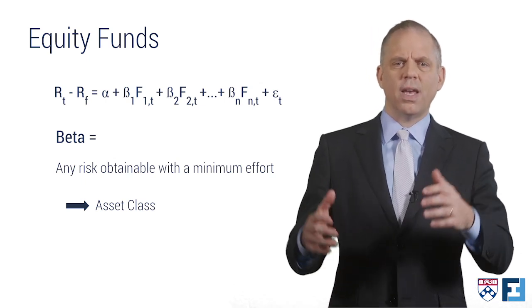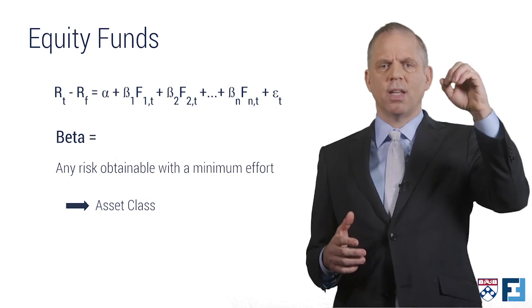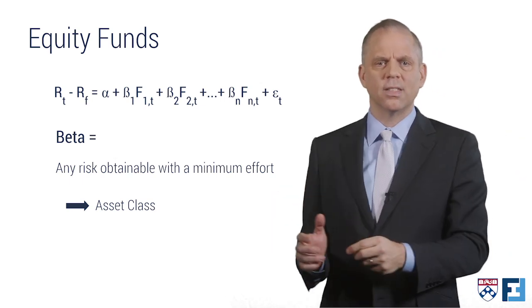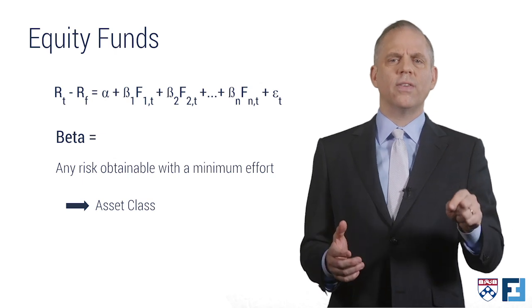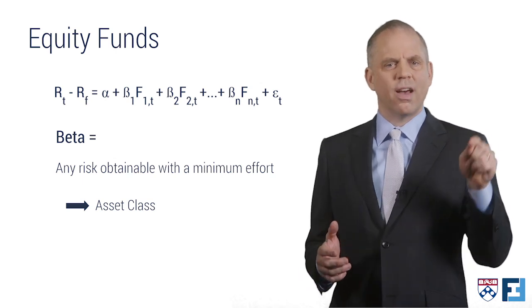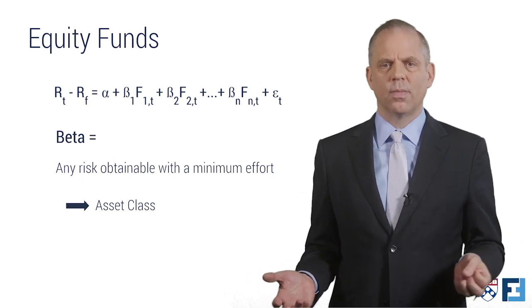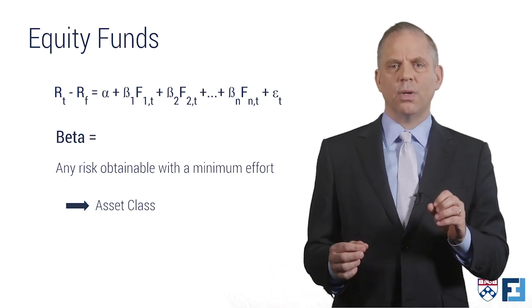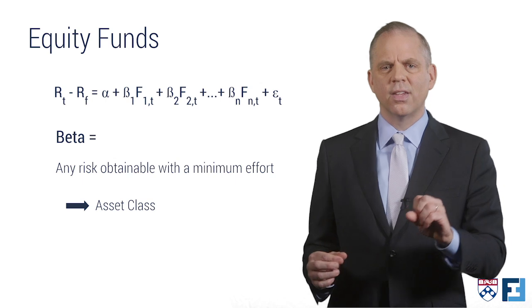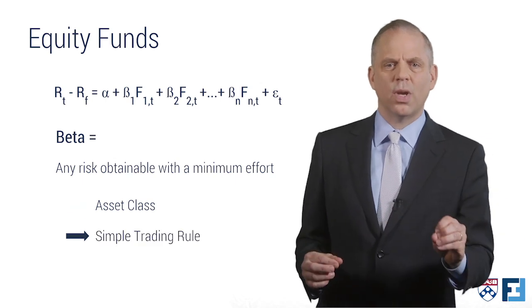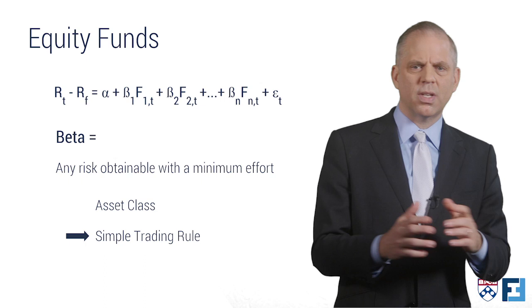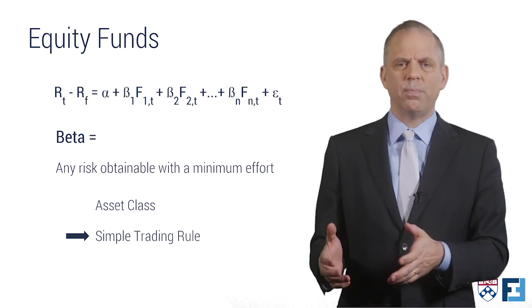The client has made a top-level decision to allocate to different asset classes, and now wants you to deliver that return of that asset class at a reasonable price. That's beta. But if the client wants exposure to not just an asset class, but instead any simple trading rule that doesn't require any special skill or research, we still call that beta.